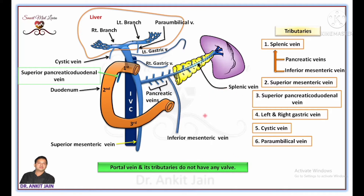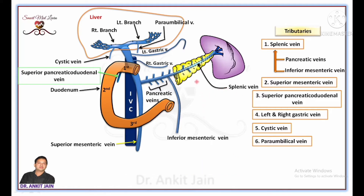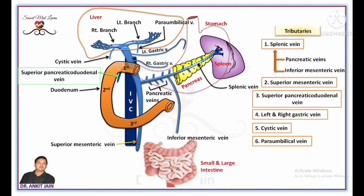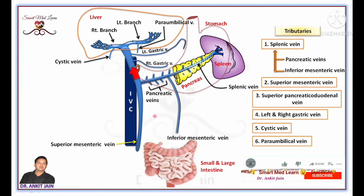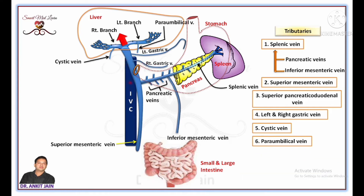It is clear that portal vein collects blood from the pancreas via pancreatic veins, from the spleen via splenic vein, from the stomach via gastric veins, and from the intestine via inferior and superior mesenteric veins. Blood from the portal vein is transported into the liver. A question arises: why does the blood from these viscera go into the liver instead of directly draining into the inferior vena cava?